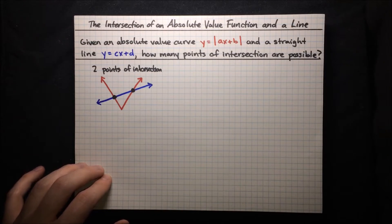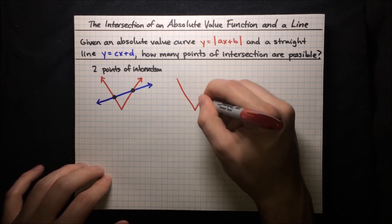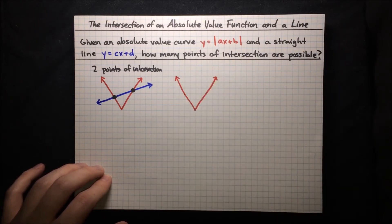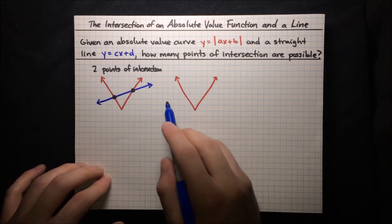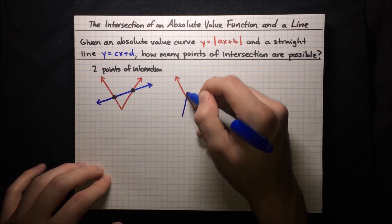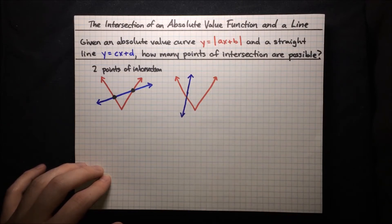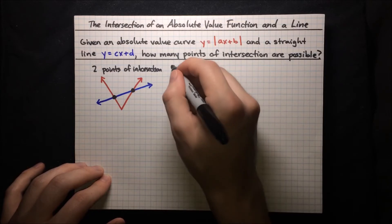But there are other possibilities too. Let's draw another V-shape for our absolute value. Let's try to orient the line a little bit differently. Maybe instead of cutting fully across the V, it only enters the V but isn't flat enough to make it out. So maybe the line looks like this — in this case, we only have one point of intersection.